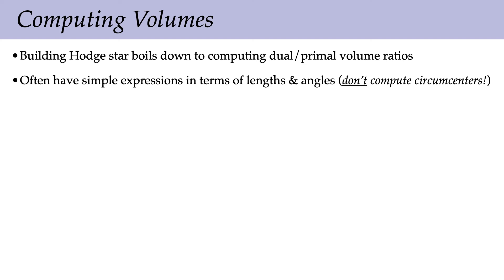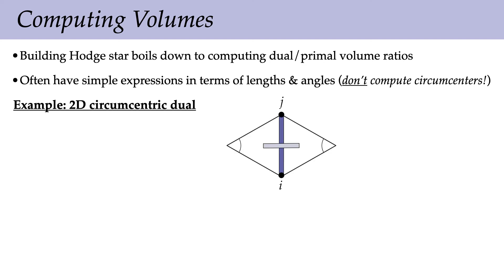Other volume ratios can be computed similarly. For the Hodge star on primal zero-forms, we need the dual two-cell volume divided by the primal zero-cell volume. Rather than divide by zero, we treat the vertex volume as one — so we just multiply by the dual cell area, expressed in terms of lengths and angles of the triangulation. For the Hodge star on discrete two-forms, we divide by the triangle area, expressible via Heron's formula: if s is the semi-perimeter, the area is √(s(s−a)(s−b)(s−c)).